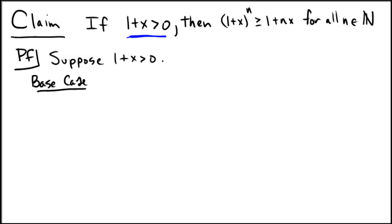So, in the base case, we would do n equals 1, the first natural number, and we'd say the left-hand side is 1 plus x to the power of 1, which of course is 1 plus x.